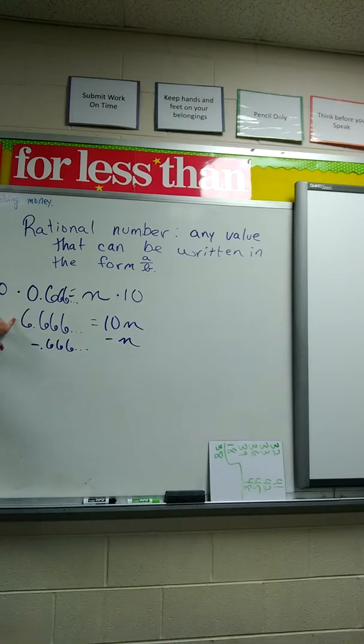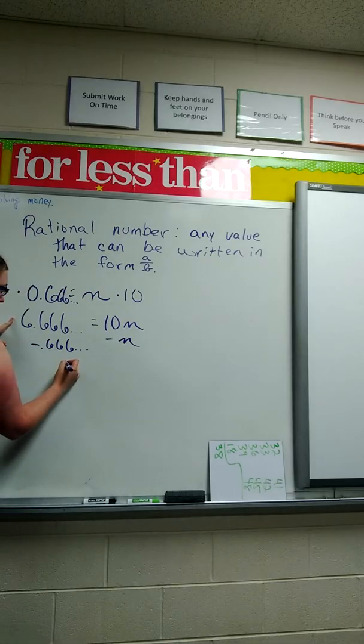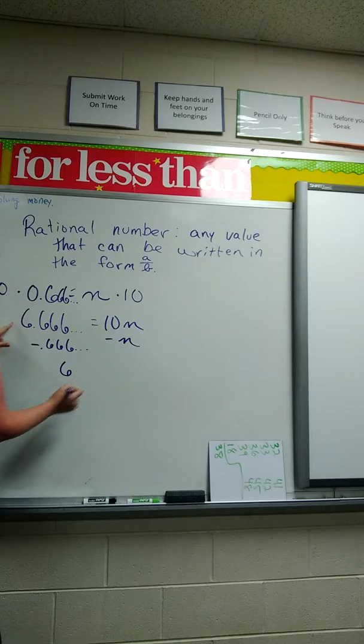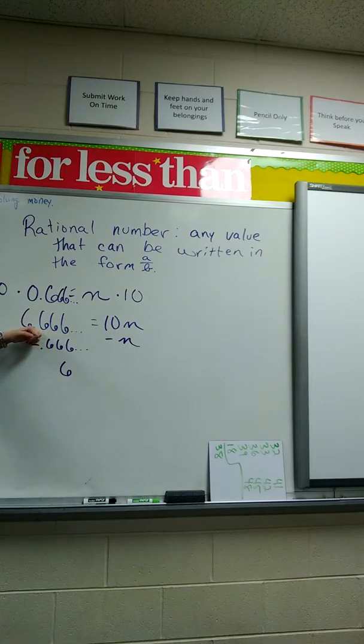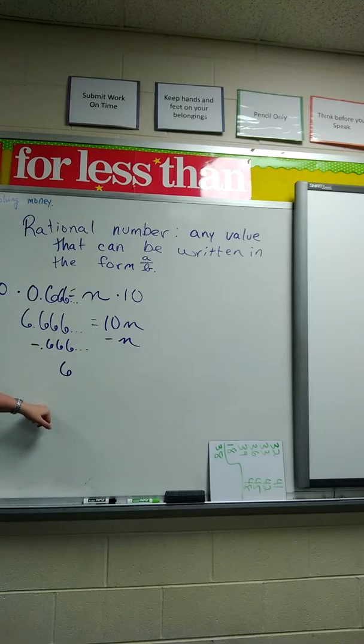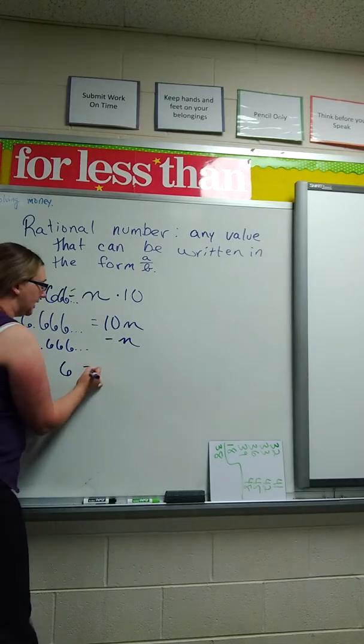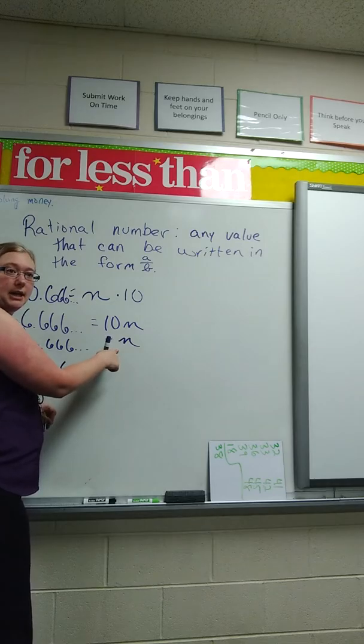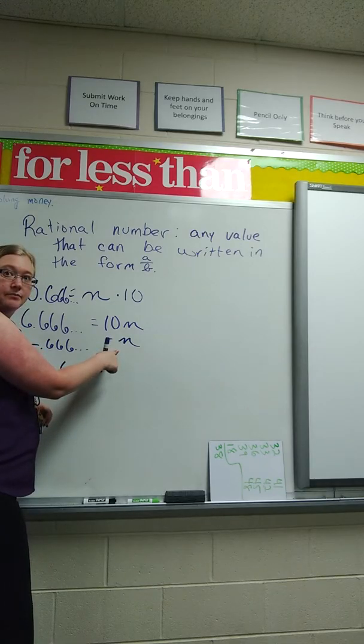Okay. So 6.66666 minus 0.66666 leaves me with what? No? 6. 6. Because if I take my decimal value and I subtract the decimal, I'm left with a whole number, right? Okay? That's equal to what's 10n minus 1n? 9n. 9n, correct?